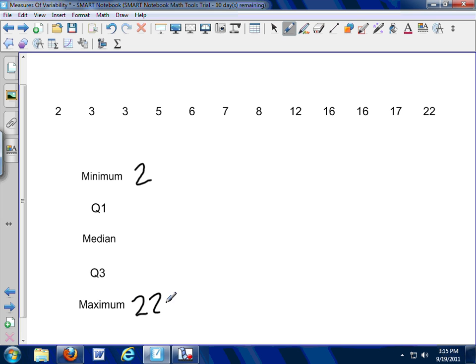Minimum. Easy. Two. Maximum. 22. In this case, I think there's 12 pieces of data. So, the median is, let's see, 3, 6, 9, 12. So, the median is right there. That cuts my data in half. Half the numbers are above that point, half are below, and so it's 7.5.